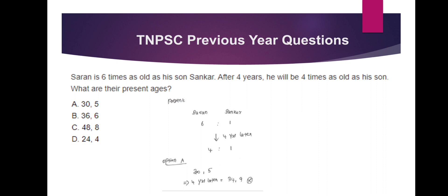The ratio is 6 to 1, then the ratio becomes 4 to 1. What are the present ages? First option is 35. The ratio check gives 34 and 9, which is 34.